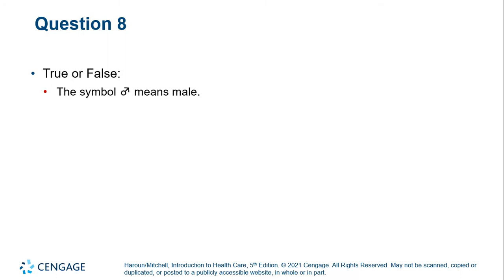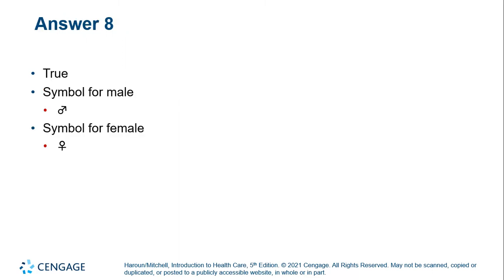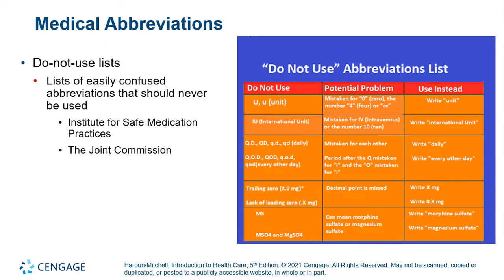The symbol shown here — a small circle with a kind of arrow attached — means male. You also see the symbol for female. There is not only an approved list but also a do-not-use list. These are easily confused abbreviations that can cause very serious errors. On this do-not-use list, 'U' for unit can be mistaken for a zero. 'IU' can be mistaken for 'IV,' so you have to write those out.